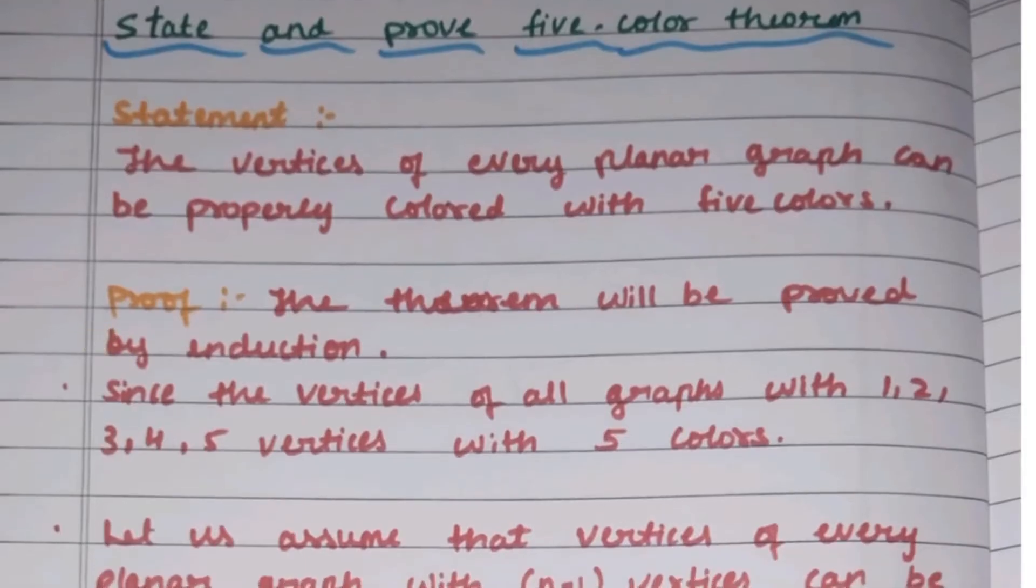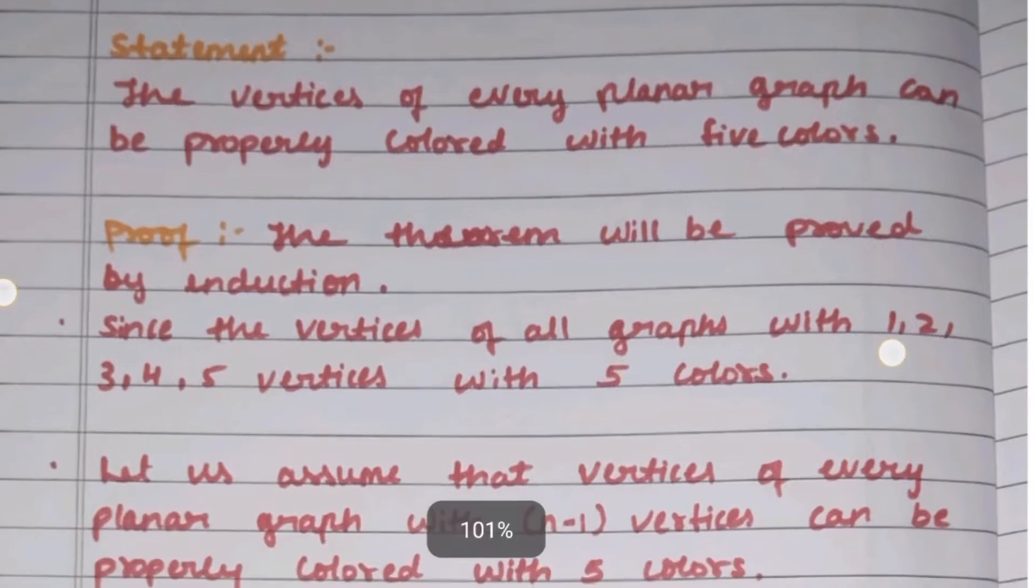What is a planar graph? A planar graph is a graph that can be drawn in a plane where edges meet only at vertices and do not cross each other. Proper coloring means coloring the graph so that no two adjacent vertices have the same color. We'll prove this theorem.